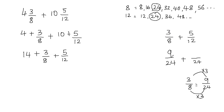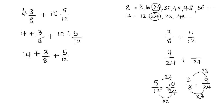So in place of 3 eighths I'm going to write 9 over 24. Now the same thing with this fraction: how do I get from 12 to 24? I can multiply the denominator by 2, because 12 times 2 is 24. And if I'm multiplying my denominator by 2, I also have to multiply my numerator by 2 to keep my fraction balanced. 5 times 2 is 10. So I can replace 5 twelfths with 10 over 24. Now since our denominators are equal, we have a common denominator and we can go ahead and add the fractions.